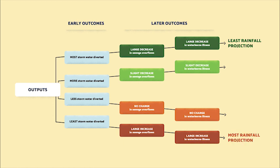The logic model expands again. A second column labeled 'early outcomes' includes four light blue boxes, and third and fourth columns labeled 'later outcomes' include four boxes each ranging in color from dark green to red. Column three boxes are labeled large decrease, slight decrease, no change, and large decrease in sewage overflows. Column four boxes show large decrease through large increase in waterborne illnesses, with arrows indicating least and most rainfall projections.